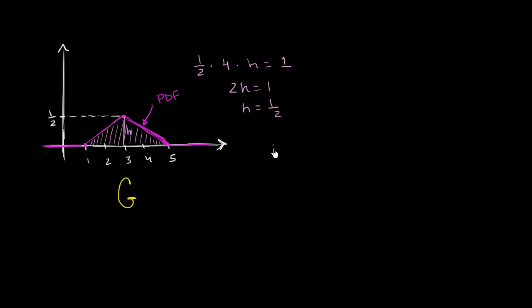What is the probability that our random variable g is greater than or equal to 2 and less than or equal to 3? What's that probability going to be?